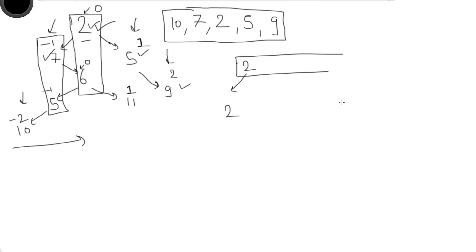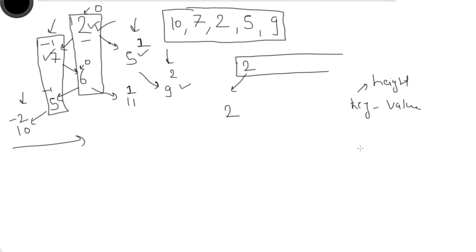We use a TreeMap because it stores entries in sorted order. The key will be the height and the value will be the node data. At the start height is 0, so we check whether height 0 is already present in the map. It is not, so we store height 0 as the key and node value 2 as the value.